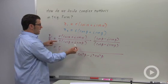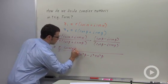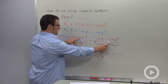And then in the top, we've got cosine alpha cosine beta. And the other real term is going to be the product of these two guys.